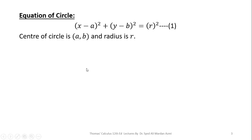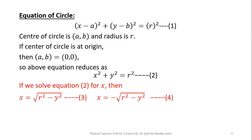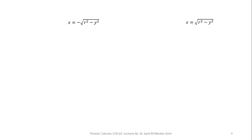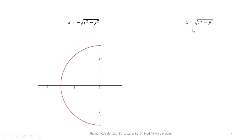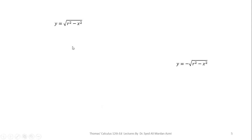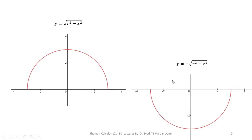The equation of a circle with center (a, b) and radius R is known. If we shift the center to the origin, the equation reduces to x squared plus y squared equals R squared — this is the complete circle with center at origin and radius R. Solving for x gives the right and left semicircle equations, and solving for y gives the upper and lower semicircle equations.